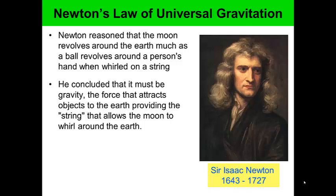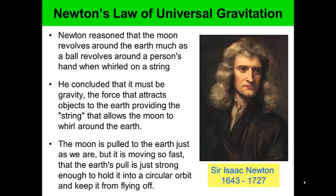The moon is pulled to the Earth just as we are, but it is moving so fast that Earth's pull is just strong enough to hold it in a circular orbit, keeping it from flying off. It's a constant balance between the forces pulling the moon towards the Earth and the forces trying to fling it away.